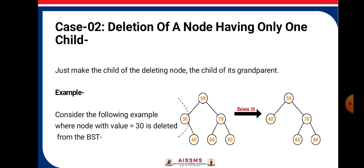Deletion of a node having only one child — just make the child of the deleting node the child of its grandparent. So when we want to delete 30, 30 will be removed and 40 would come in its place.